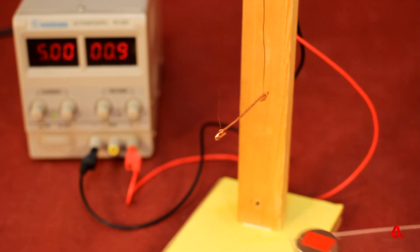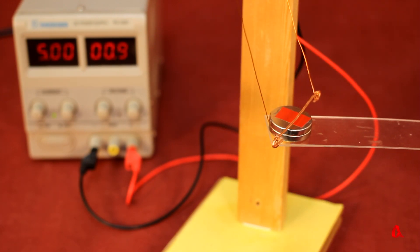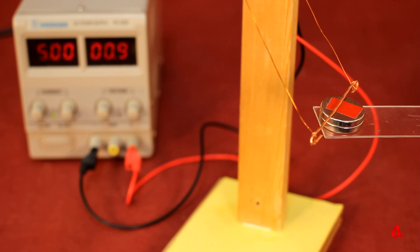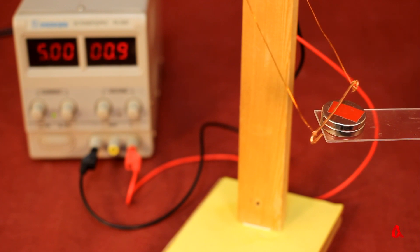If we bring a permanent magnet under the wire with the north pole up, the wire deflects across the magnetic field to the right. This means that it is affected by a force called the Ampère force.